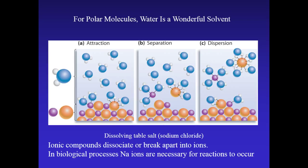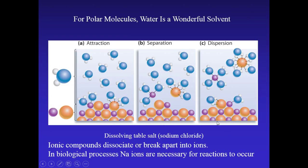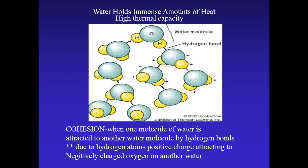We know that salt is easily dissolved in water. The negative side of the water molecule is attracted to the positive sodium ion, and the positive hydrogens are attracted to the negative chlorine ion — this is what we mean by something being dissolved in water. The ions disperse in the water, where the slight positive and negative charges are attracted to the positive and negative ions in our salts. Another property of water is that it holds an immense amount of heat — it has a high thermal capacity — due to the hydrogen bonding that exists between every molecule in liquid form.